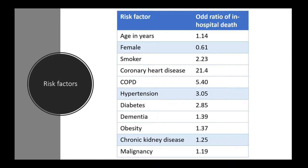Comorbidities associated with in-hospital death include coronary heart disease, COPD, hypertension, diabetes, dementia, obesity, CKD, and malignancy. For the man we looked at, he has an increased risk of in-hospital death because he is male with hypertension and chronic kidney disease.